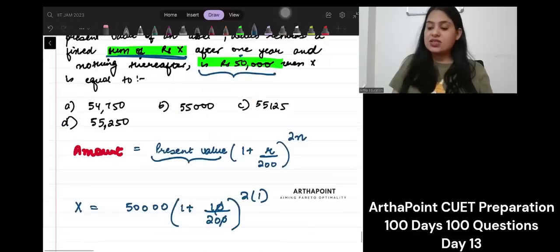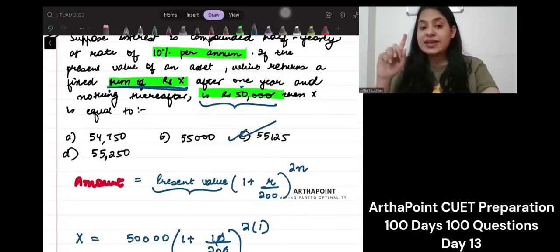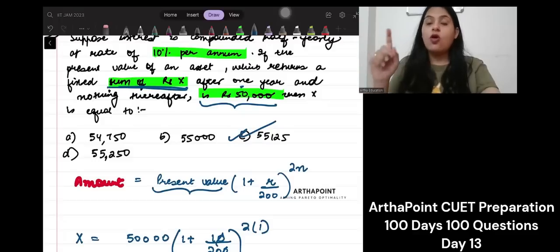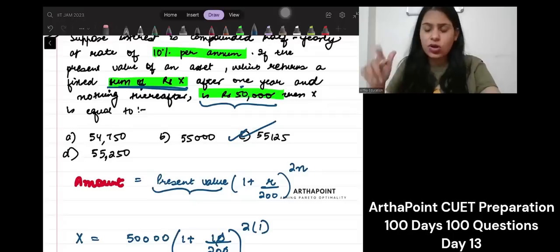So, this will be 55,125. So, the correct answer of this question is C, 55,125. The only trick in this question was that you were given that it is half yearly. That's the only trick.